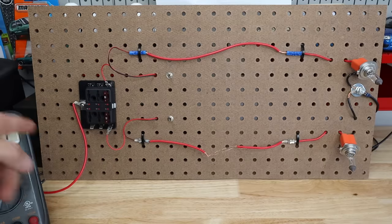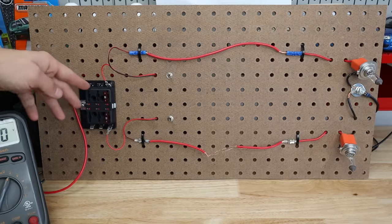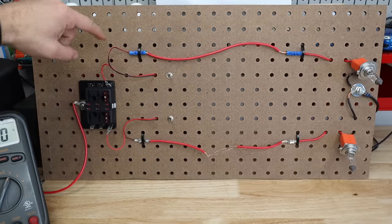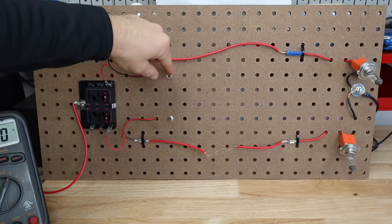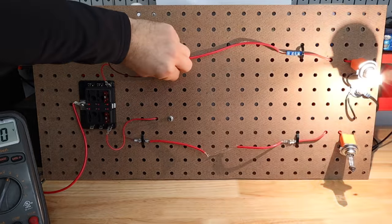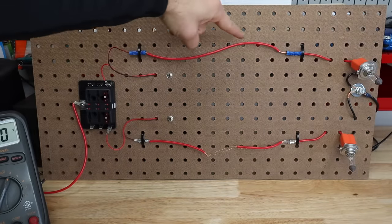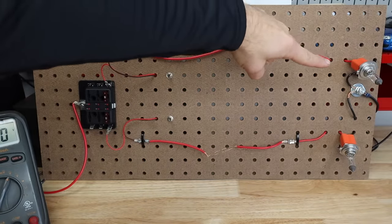Moving on we have our power supply into a fuse block so this will be for our top bulb, this is for our bottom bulb. We then come to a switch for each light that'll allow us to turn them on and off and then just a wire over to the light bulb.